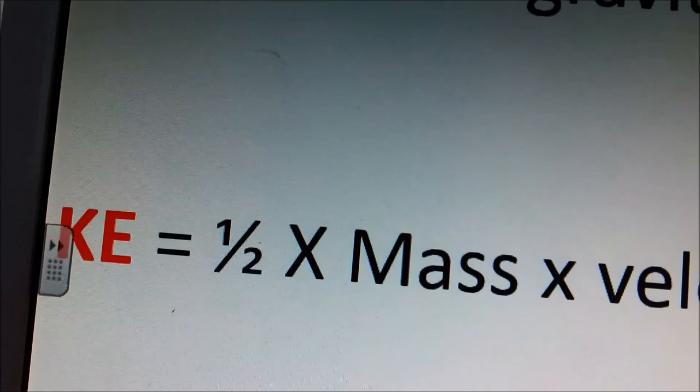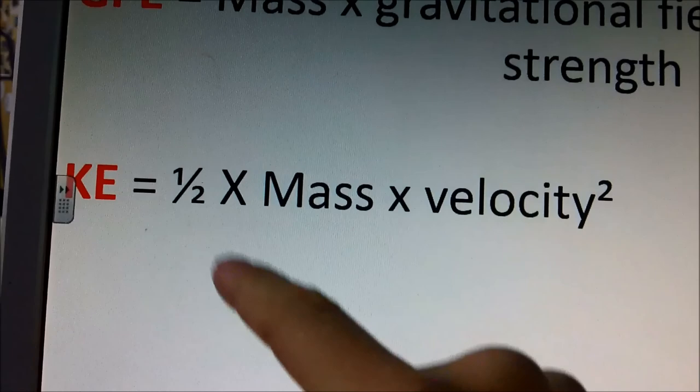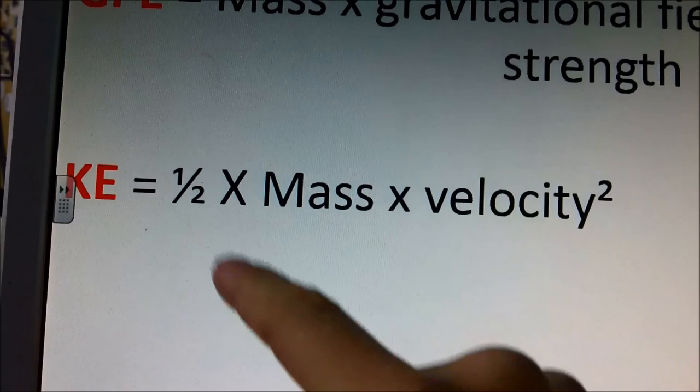Kinetic energy is half, or 0.5, times mass, times velocity squared. In this situation, always calculate your velocity squared first, then times by mass and times by 0.5. Remember, both energies are measured in joules.